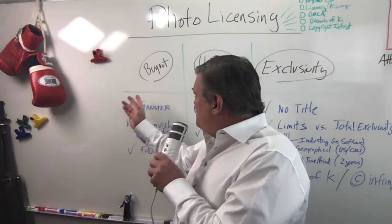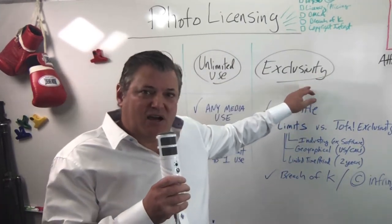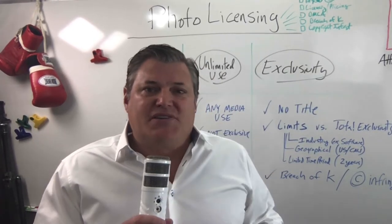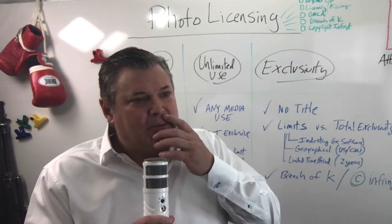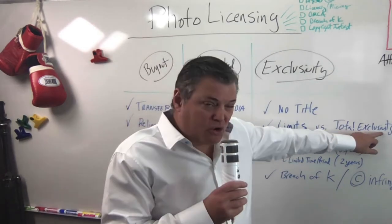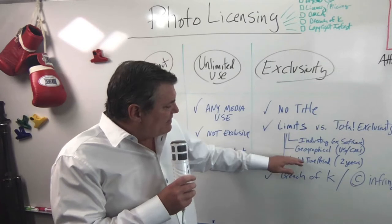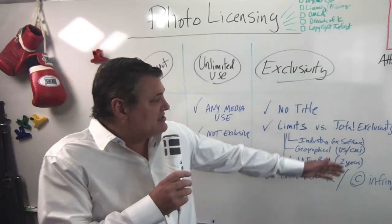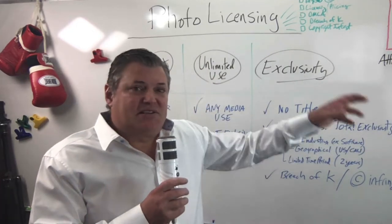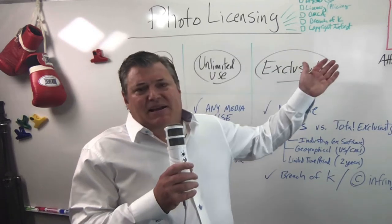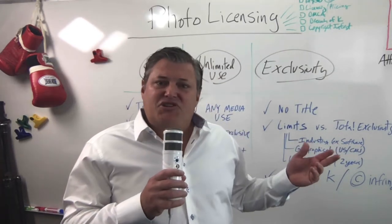The third type of contract is exclusivity. You may be paying more than unlimited use because you're asking the photographer or designer for exclusive rights. For example, a company selling in the United States says they don't want this photo used anywhere else in the US. The photographer can ask: do you want total exclusivity, or are you willing to pay a bit less? You can limit the license to a particular industry — say, only to your software company, and nobody else in the software business.